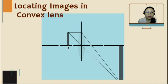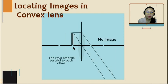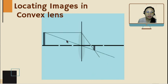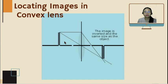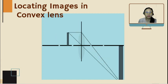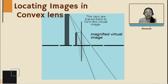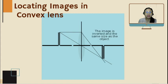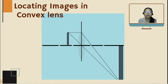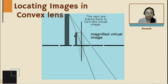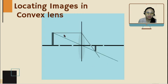Between 2F and F, then at F there is no image. Between F and V. Notice that for a convex lens, most images are produced at the back of the lens. Only one image is produced in front of the convex lens — that is when the object is between F and V.